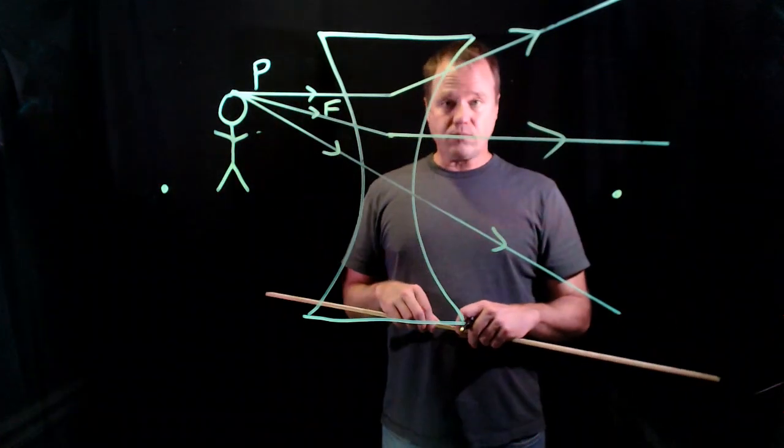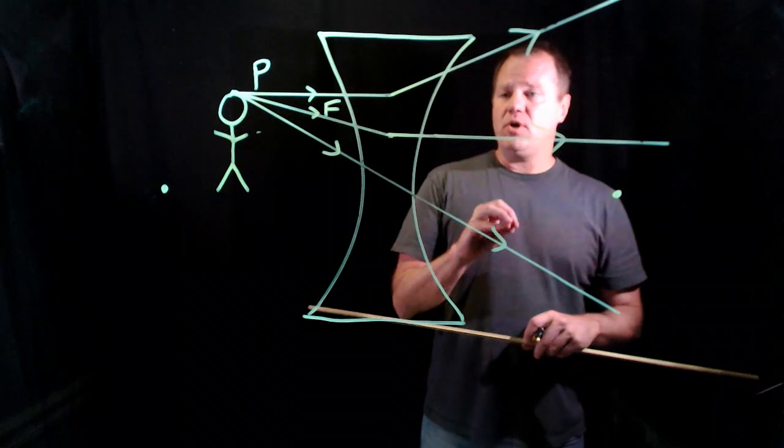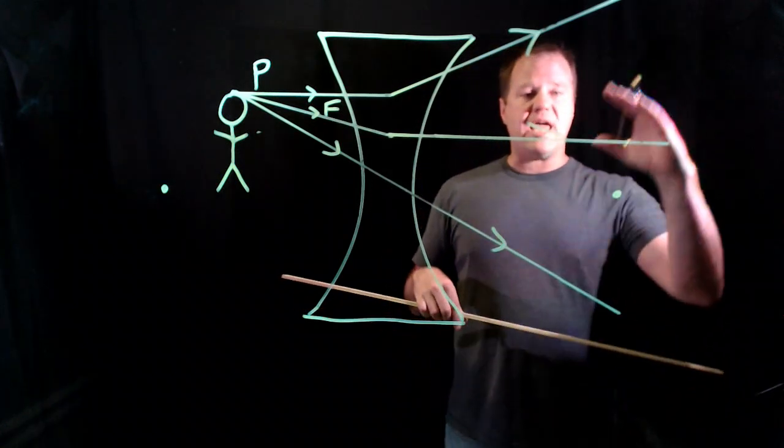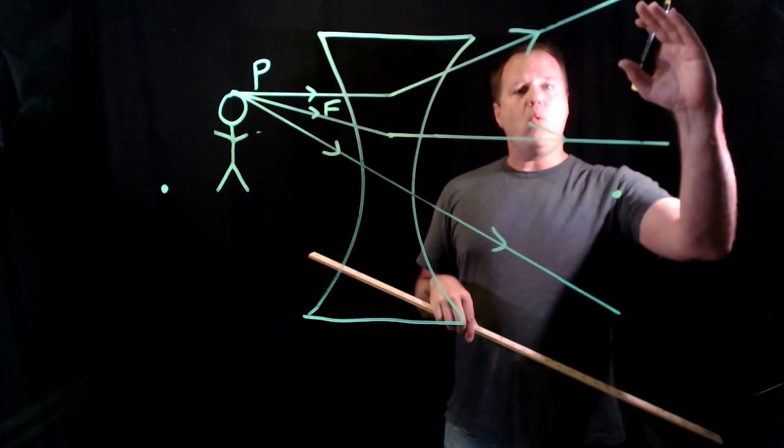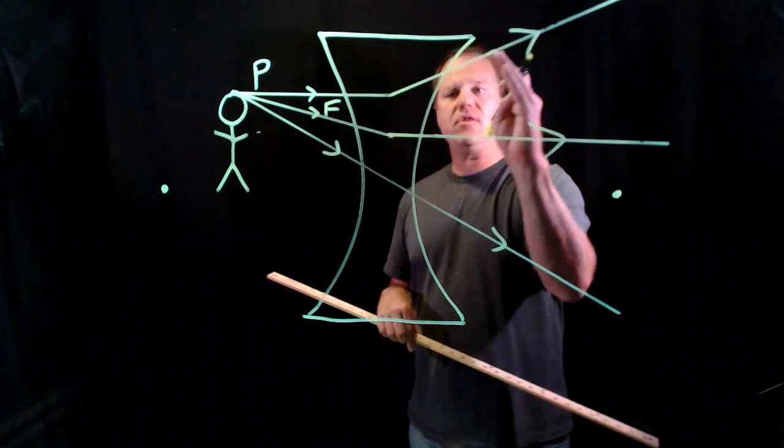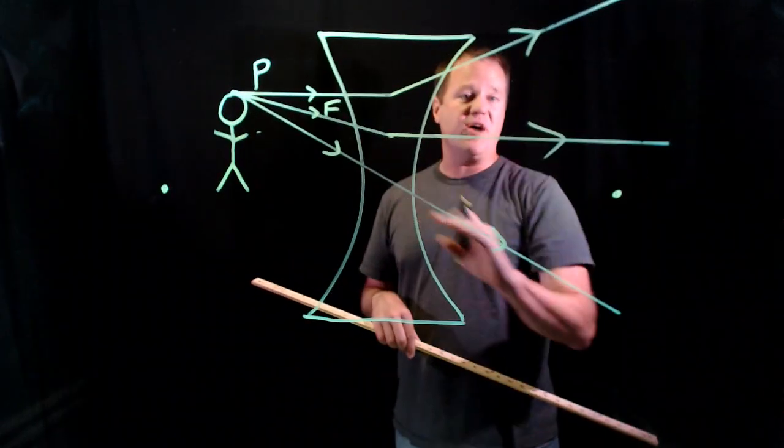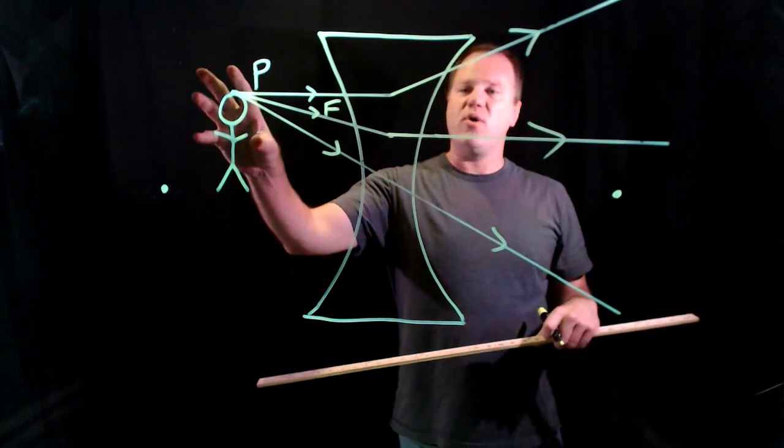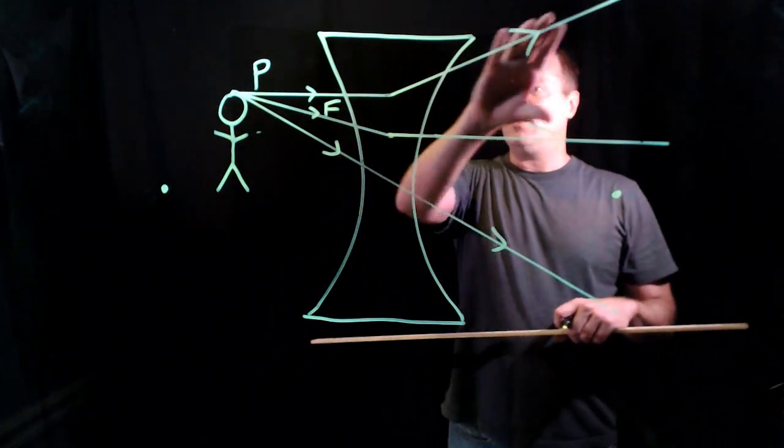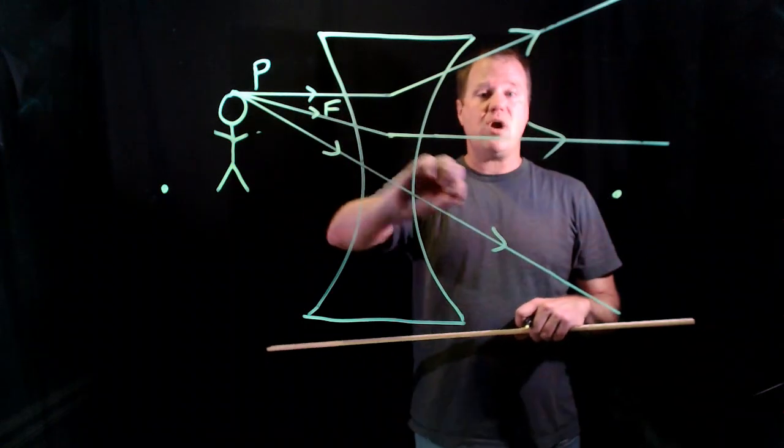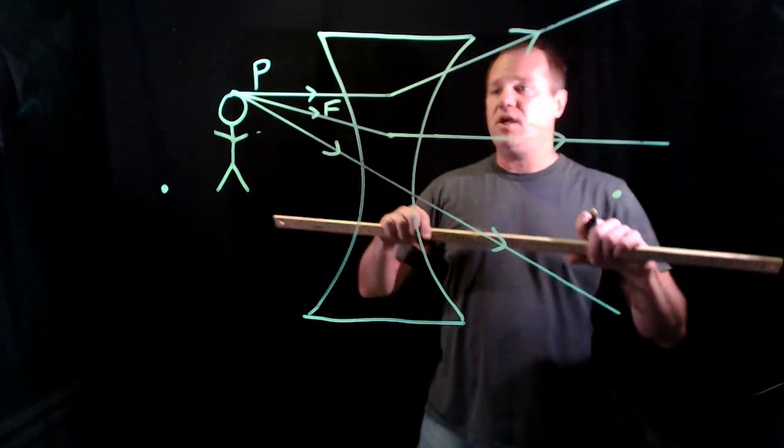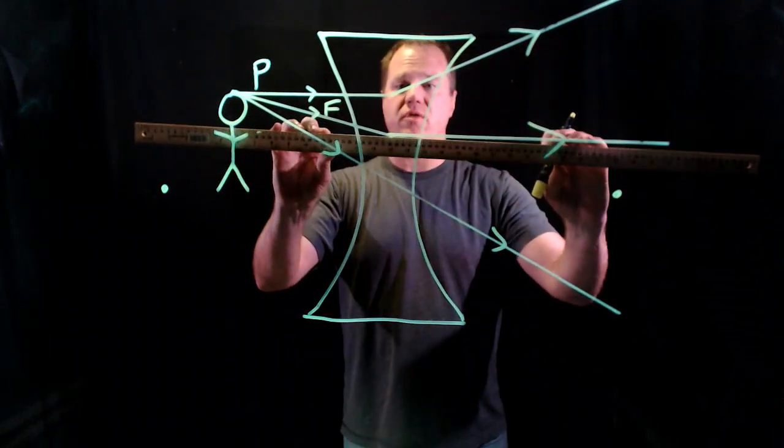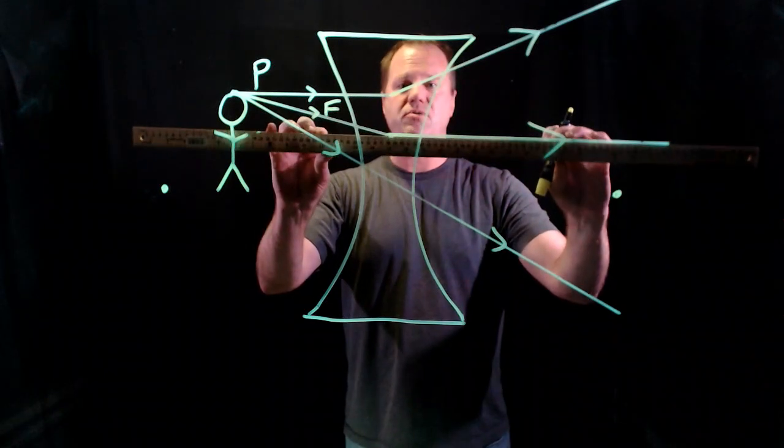So what you do when you have a virtual image is you take the point of view of an observer over here. Where would they think these rays had originated from if they hadn't hit the lens? Of course, we know it comes from here, but if we think about where these rays appear to have originated from, then we can locate the image for the observer on the other side.